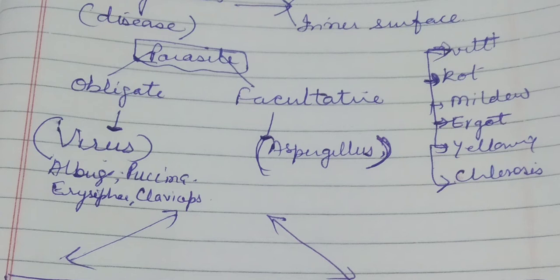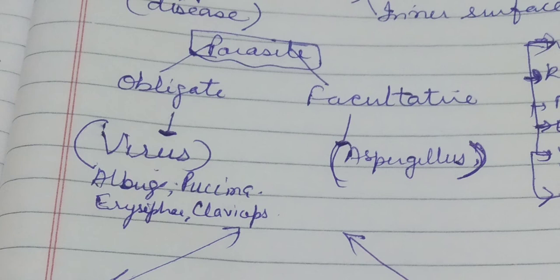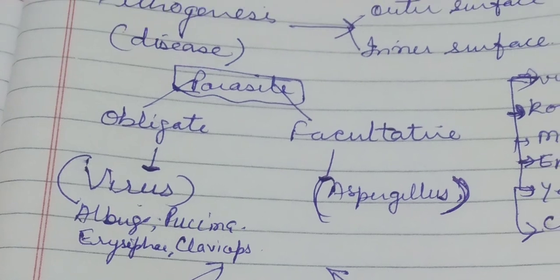After entering the host and completing the pathogenesis process, obligate parasites create different types of symptoms according to the damage they do in the host cells. The symptoms appear in the form of wilt, rot, mildew, ergot, yellowing, and chlorosis. Wilt infects the vascular tissue; rot infects vascular as well as stem or leaf parts; mildew affects the leafy part; ergot affects the seed; yellowing and chlorosis are symptoms of mycoplasma and viruses, and they affect the leafy part.